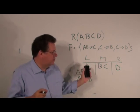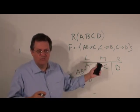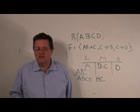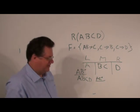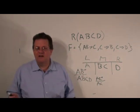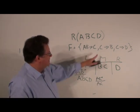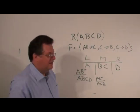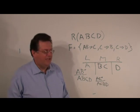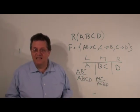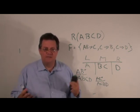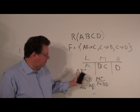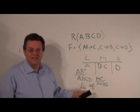Here's one little thing to be careful of: we also have to try the left-hand side attribute with the other middle attribute. So let's try the closure of AC. By reflexivity we get A, C. C determines B, so we add B. C determines D, so we add D. AC closure is A, B, C, D — so AC is also a key. Therefore, the prime attributes are A, B, C because they are part of at least one key, and D is not part of any key, so D is non-prime.